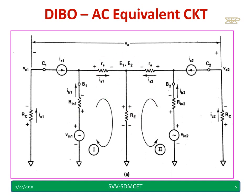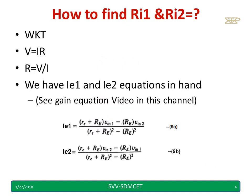Note the gain equation we have already derived. Now we are going to find out rin1 and rin2. We know V is equal to I into R, Ohm's law, R is equal to V divided by I. Also we have derived the equations i1 and i2 in the previous video, i1 equal to equation 9a, i2 equal to equation 9b.